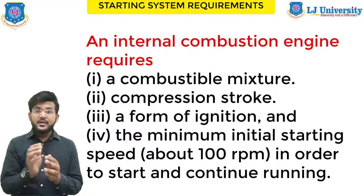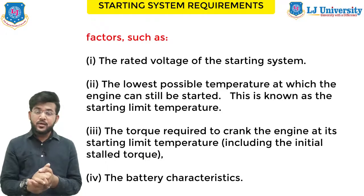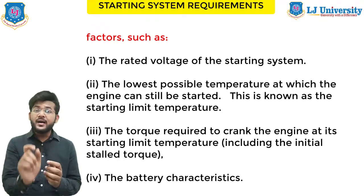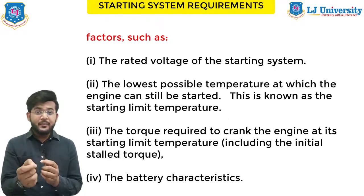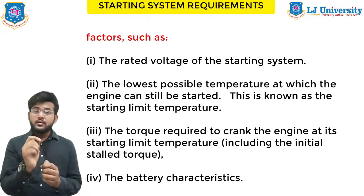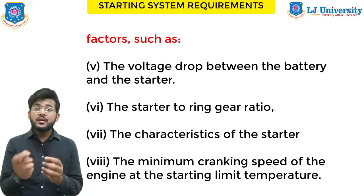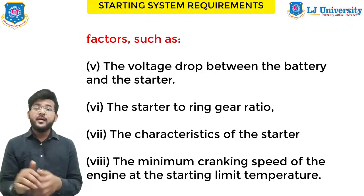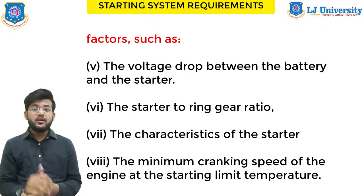Attainment of this minimum speed is dependent on a number of different factors. First, the rated voltage of the starting system. Thereafter, the lowest possible temperature at which the engine can still be started — this is known as the starting limit temperature. Next, the torque required to crank the engine at its starting limit temperature, including the initial stalled torque. Next, the battery characteristics. Thereafter, the voltage drop between the battery and the starter motor. Thereafter, the starter-to-ring gear ratio. Thereafter, the characteristics of the starter motor — what type of motor it is. And finally, the minimum cranking speed of the engine at the starting limit temperature.